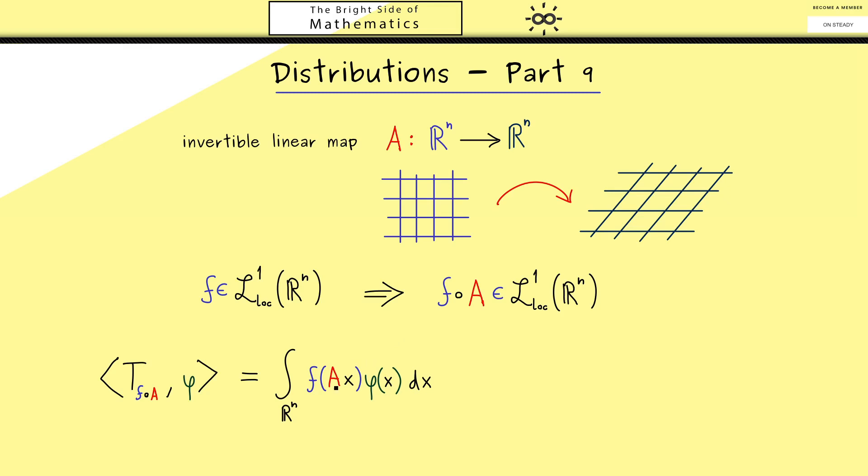However we know we want to get to T_f so to the original function f which means we have to get rid of A. Indeed in an integral we know we can do this by a substitution. In other words the change of variables formula can help us here. Now if you are familiar with this formula you might know that the determinant of A plays a crucial role here.